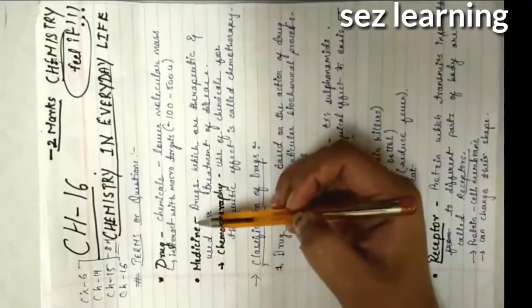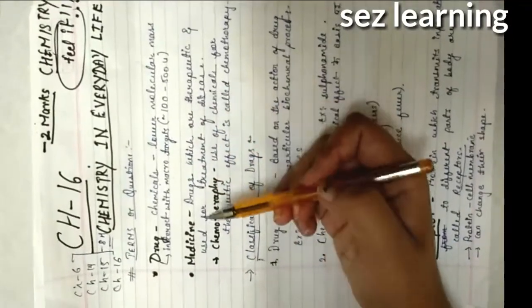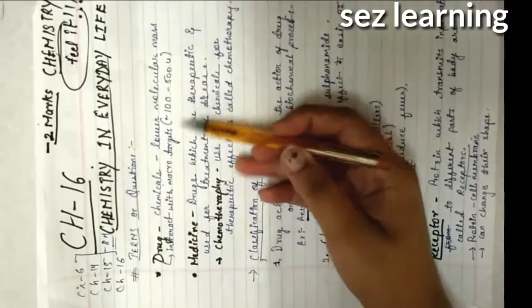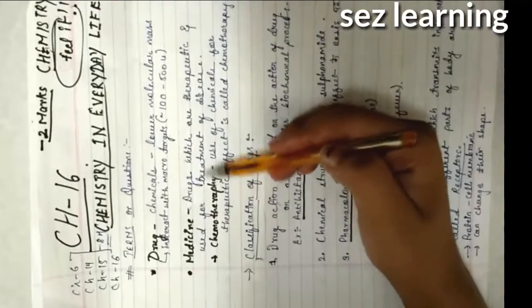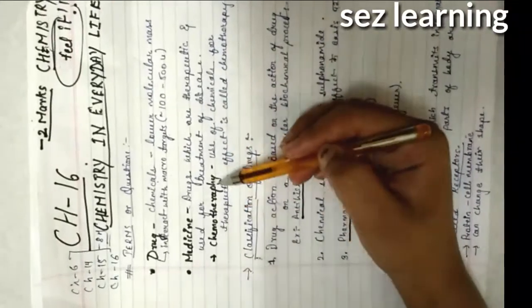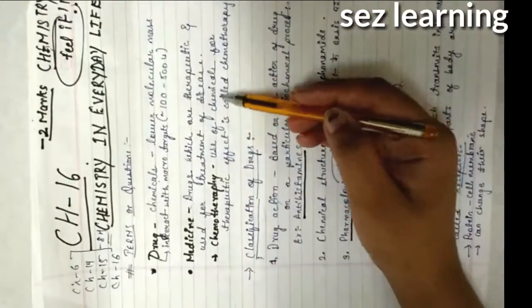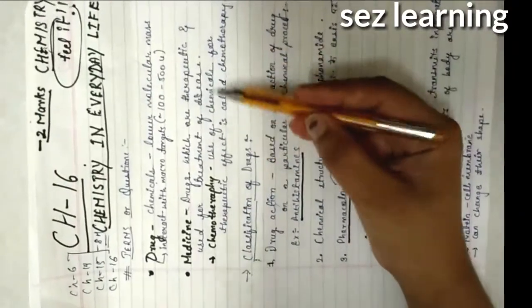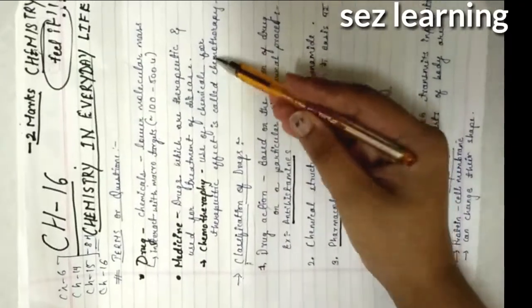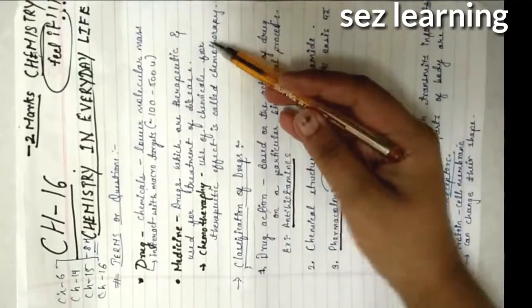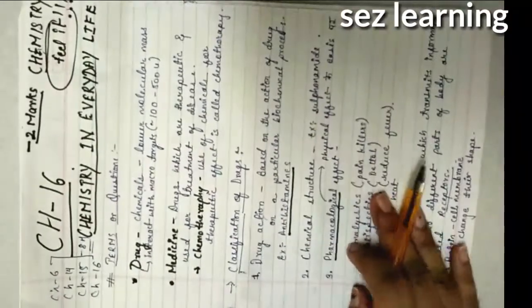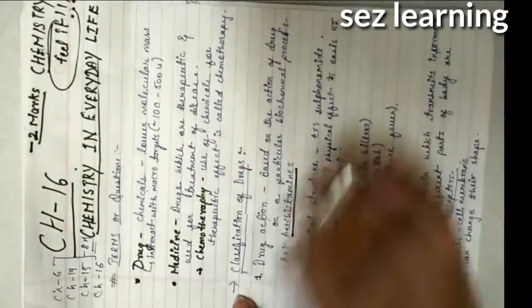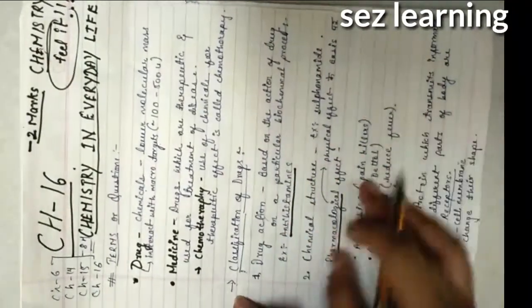Medicines are drugs which are therapeutic and used for the treatment of disease - we know that. Chemotherapy is the term used for chemicals used for therapeutic effect. Whatever procedures or chemicals are used for therapeutic effect is called chemotherapy.